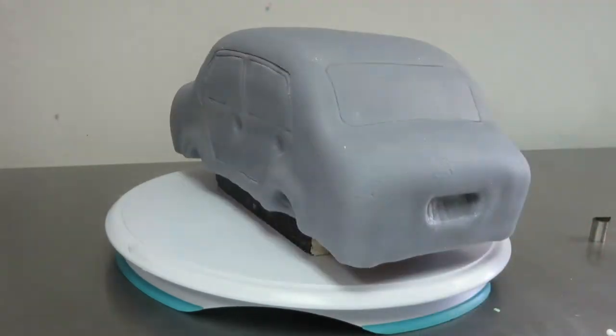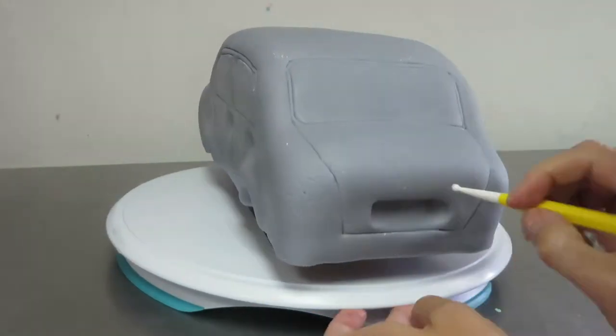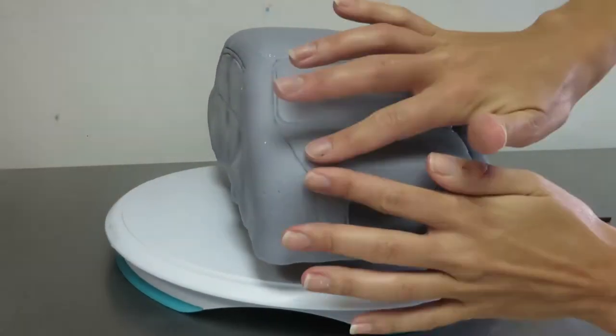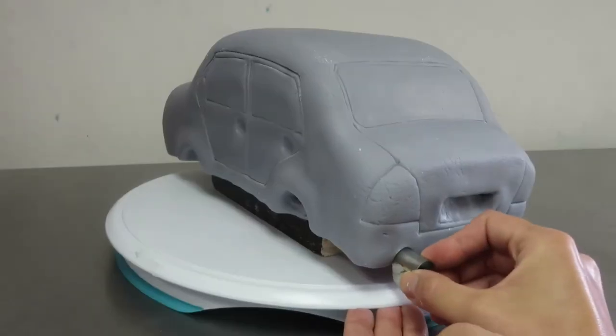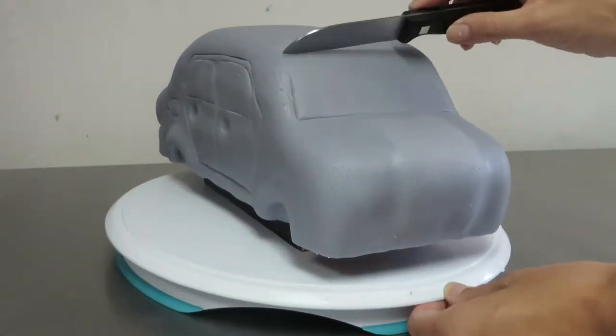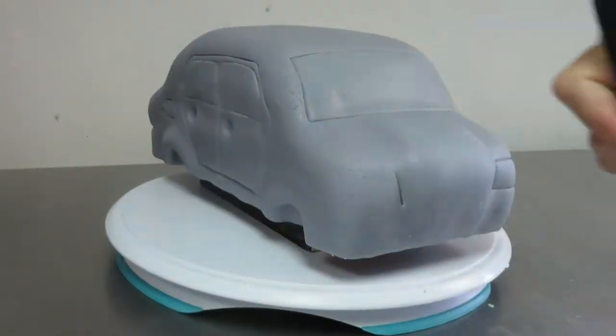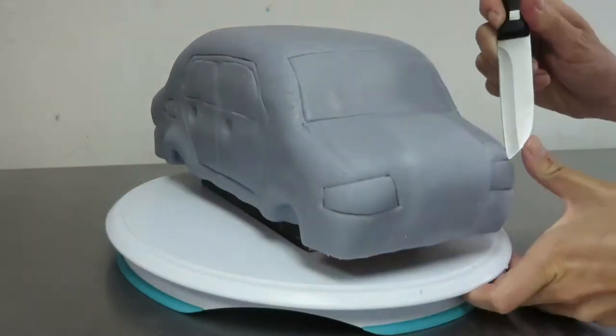I'm using my knife to mark out the rear windscreen and the boot or trunk of the car. Sharpening up the edges and marking the rear lights, exhaust pipe, windscreen, headlights, and bonnet or hood.